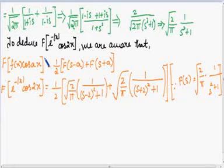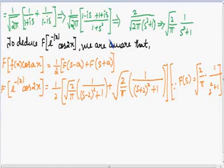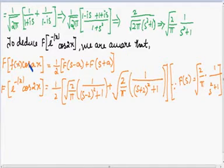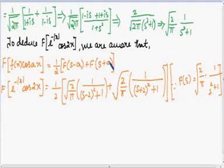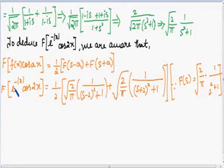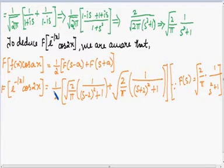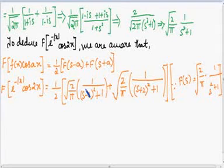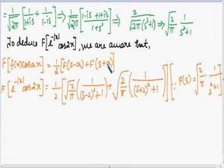To find the Fourier transform of e^(-|x|)·cos(2x), we use the property: F{f(x)·cos(ax)} = ½[F(s-a) + F(s+a)]. Here f(x) = e^(-|x|) and a = 2, so we write this as ½ times F(s) with s replaced by s-2 and s+2 respectively.